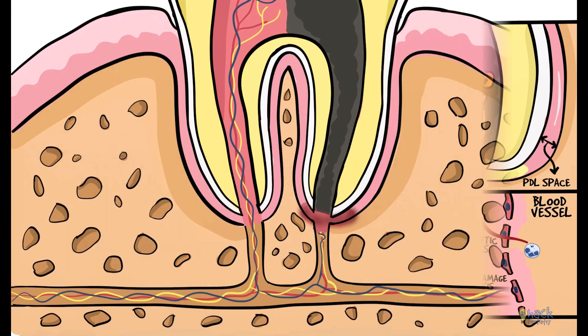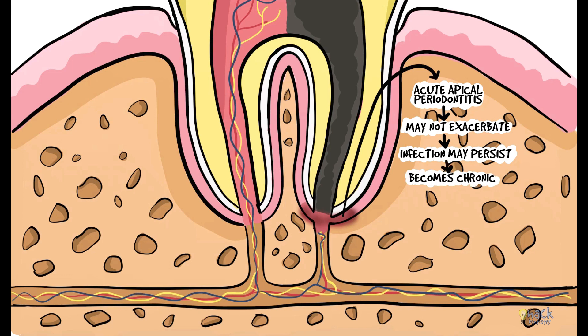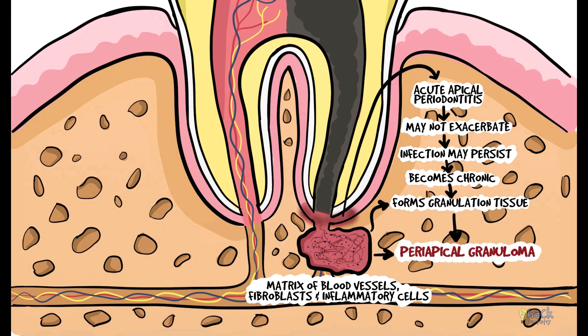Many a time acute periapical periodontitis may not exacerbate. If the infection persists and is left untreated the inflammatory process becomes chronic. The periapical tissue, in an attempt to heal, reacts by inducing formation of granulation tissue, which is a loose matrix of numerous blood vessels, fibroblasts and inflammatory cells. This is a periapical granuloma.